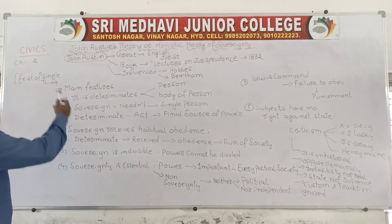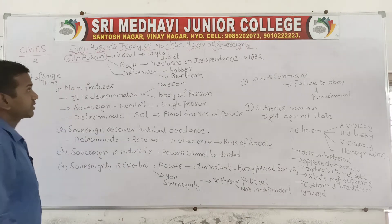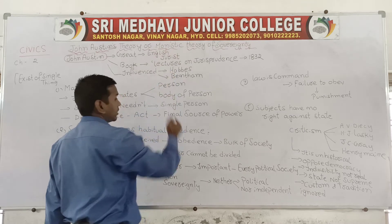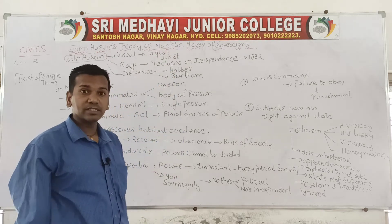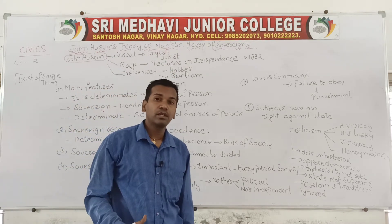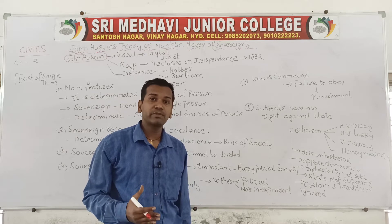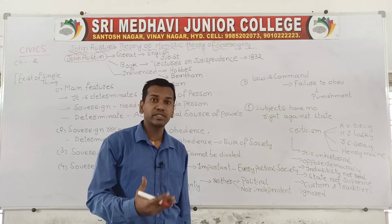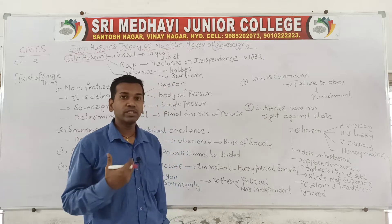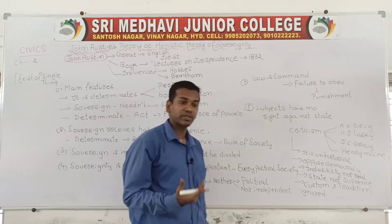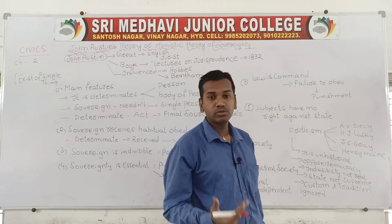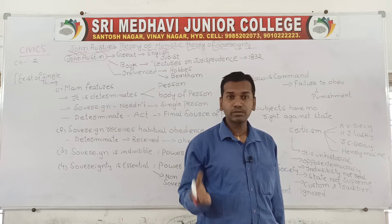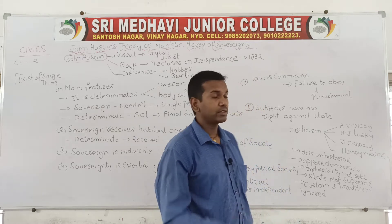John Austin's monistic theory of sovereignty — what is meant by monistic? Mono means single. Strictly speaking, power should be given to a single person — that is called monistic. Power should be given to only a single person. For example, the state: sovereignty should be under the control of the state, and power should be under the control of sovereignty.